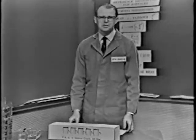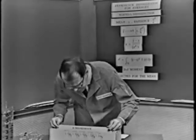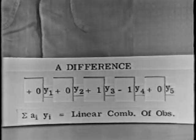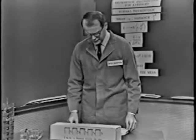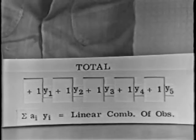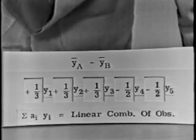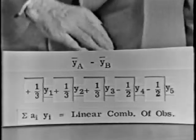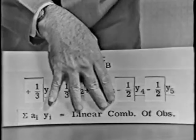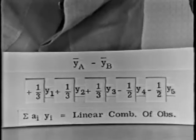Supposing I ask you to think in terms of the following statistic: the difference between the third and fourth observations. Think of the difference between the third and fourth observations and review it as a linear statistic. The first, second, and last observations are preceded by zeros, and there's a plus one in front of y3 and a minus one in front of y4. So the difference is a linear statistic. Here's a popular statistic — the total of the observations. Each observation is pre-multiplied by a one, and they're all summed up to give the total. Here's a very interesting statistic: suppose the first three observations were taken under process A and the last two under process B, and you want the difference between the two averages. The first three observations would have coefficient one-third to give you y-bar A, and the last two would have coefficient minus one-half. So there's a linear statistic which is the difference between two averages.